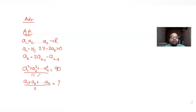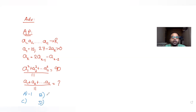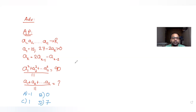There are four options given to us: option A is minus 1, option B is 0, option C is 1, and option D is 7. We need to figure out the correct answer.